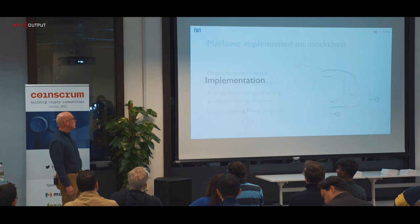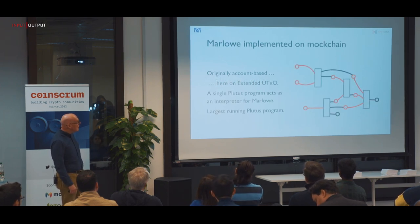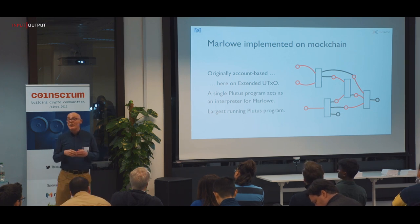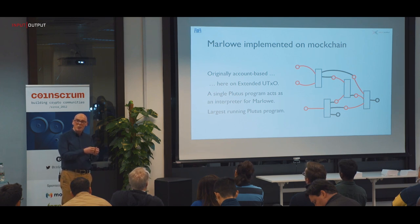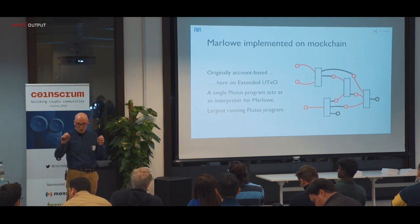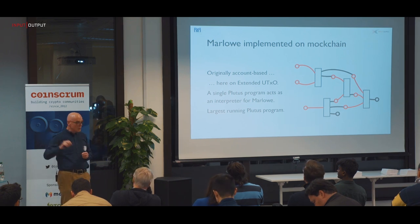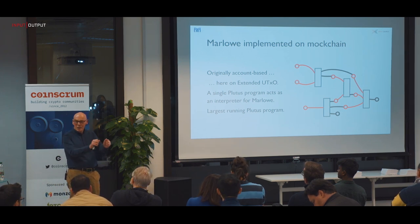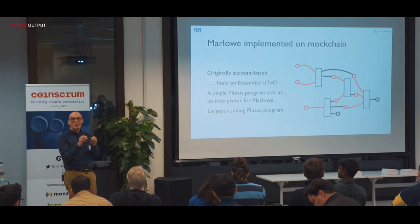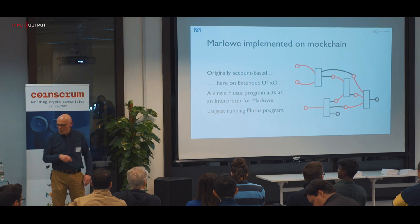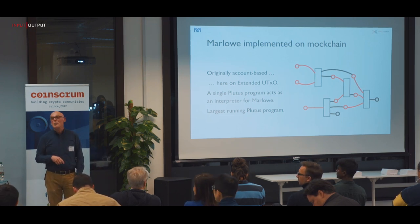Regarding implementation: Marlowe runs as a single Plutus program. We have an interpreter for Marlowe that runs as a single Plutus program, and we use the extended UTXO model to pass data — the contract's evolving state — from one transaction to another. It's very elegant: we push the Marlowe interpreter down as a single program and pass the evolving contract as data on the blockchain. At the moment, the Marlowe interpreter is the largest running Plutus program, by a large margin.